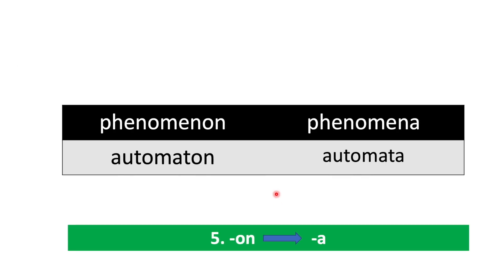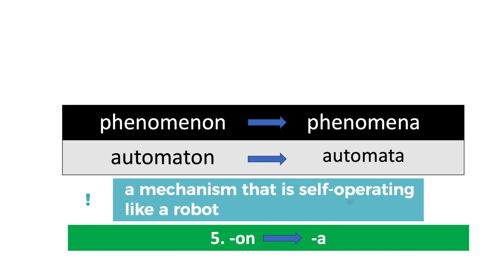Fifth category: words ending with on for singular and with a for plural. So we have here phenomenon/phenomena. Phenomenon means an observable fact or event. Automaton/automata. Automaton is a mechanism that is self-operating like a robot.